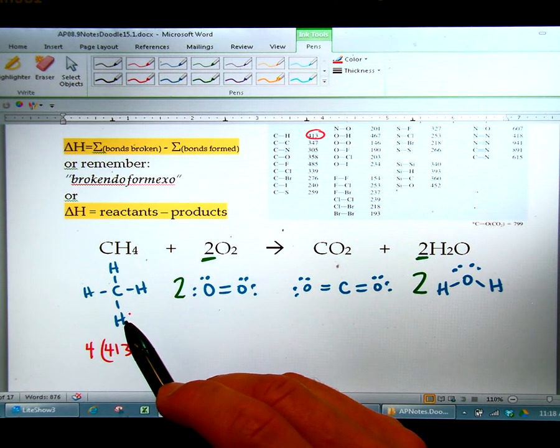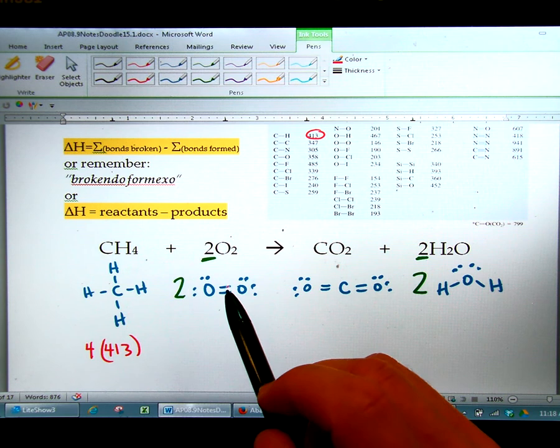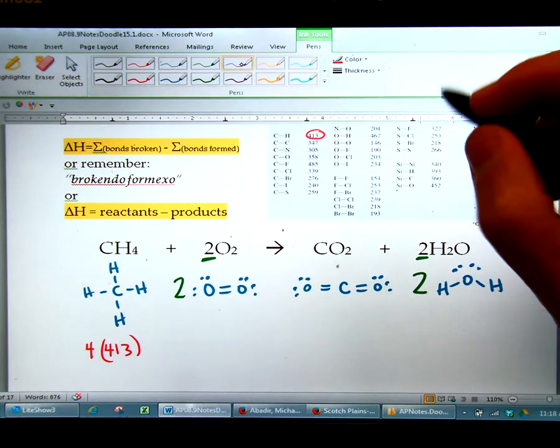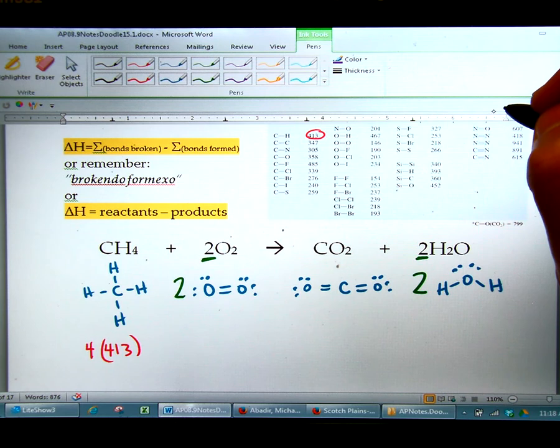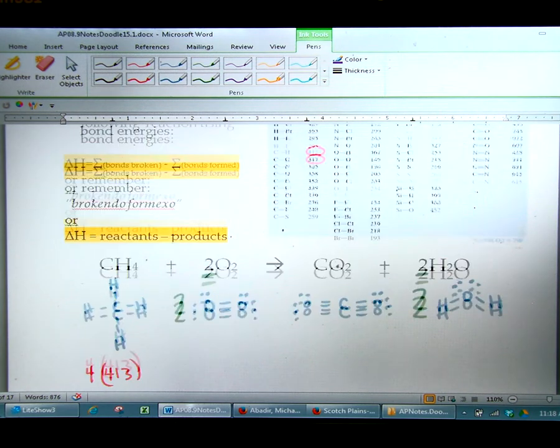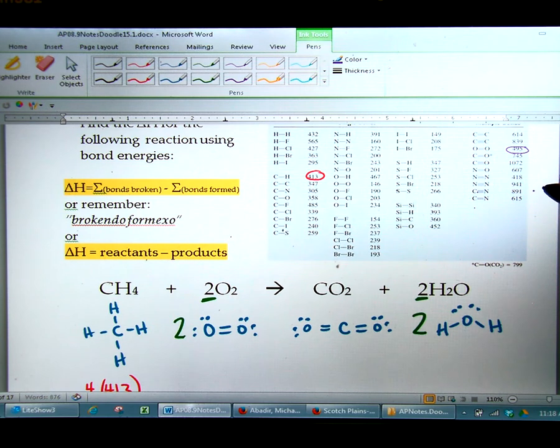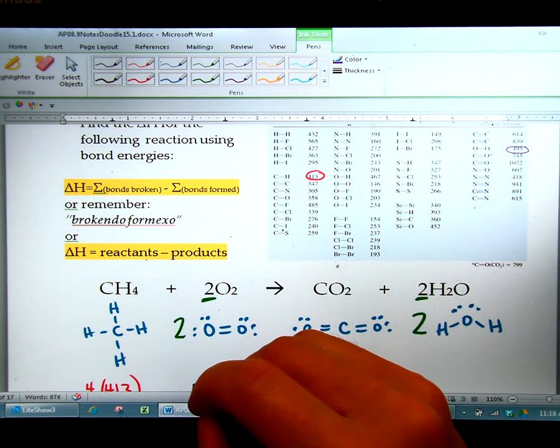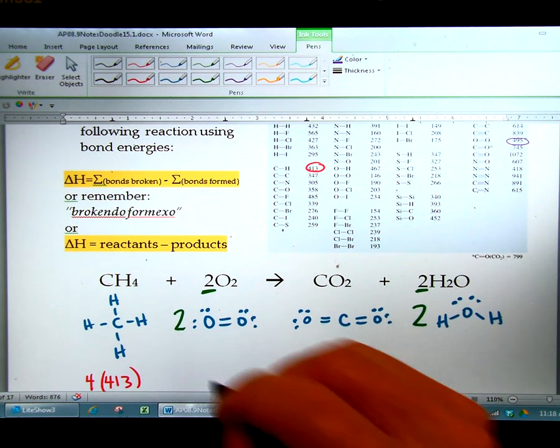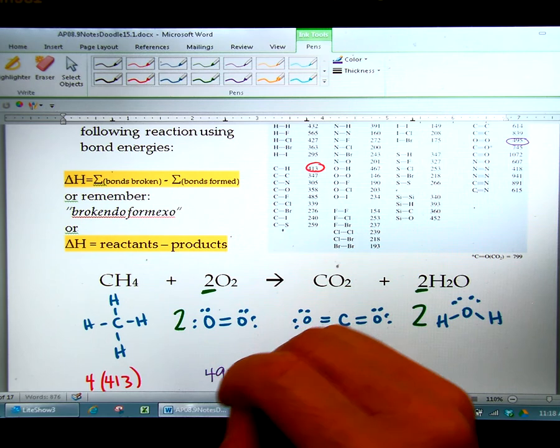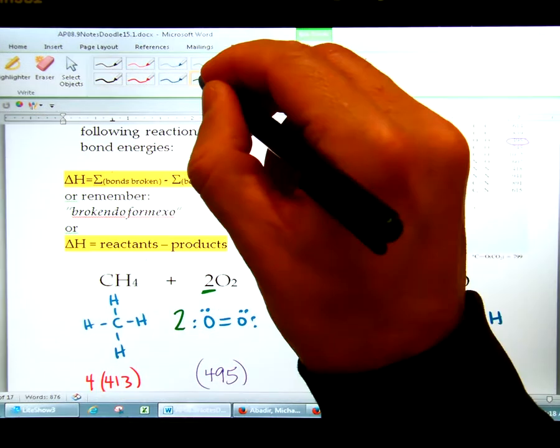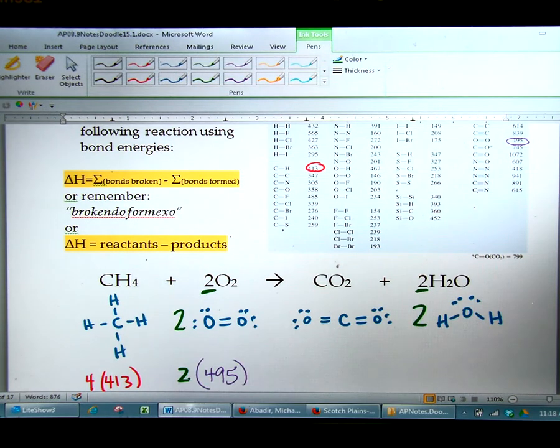Then we're going to look for the O double bond. And that bond right here, O O double, is going to be, on this part of it, 495 right there. 495. So we're going to have 495 kilojoules for that one. But, remember, there are two of them in the equation, so you have to put a two in front of there.